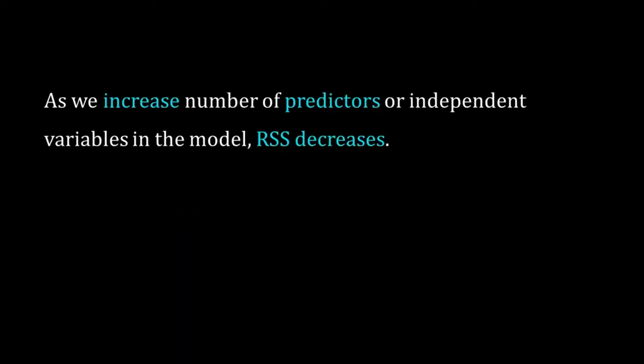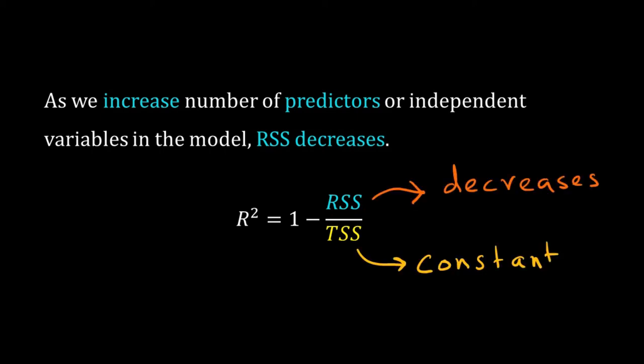Now, if we add a new predictor or independent variable in our model, I mean a new x, say xk plus 1, the RSS will either decrease or it will remain same. In general, with the increase in the number of the predictors in our model, RSS drops and the fit of the model to the data gets better.